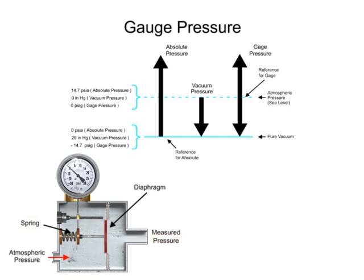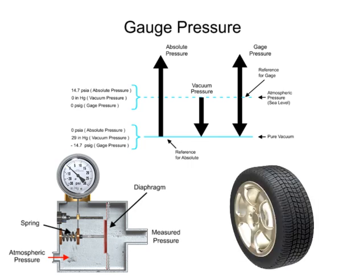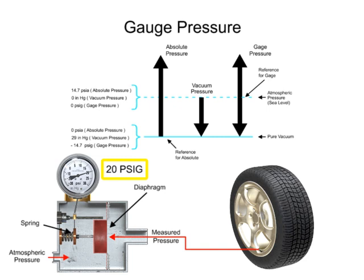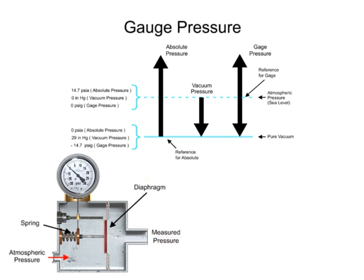Positive gauge pressures are demonstrated with an inflated tire. When the sensing element is attached to the tire, a positive pressure is indicated on the gauge. Negative gauge pressures are indicated on the gauge with pressures below atmospheric pressure. The maximum negative value for gauge pressure is pure vacuum, or negative 14.7 PSIG.